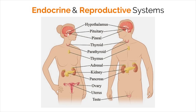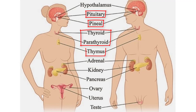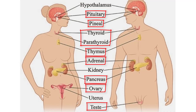The main parts of this system include, but are not limited to, the pituitary gland, pineal gland, thyroid and parathyroid glands, thymus, adrenal glands, and pancreas along with ovaries in females and testes in males.